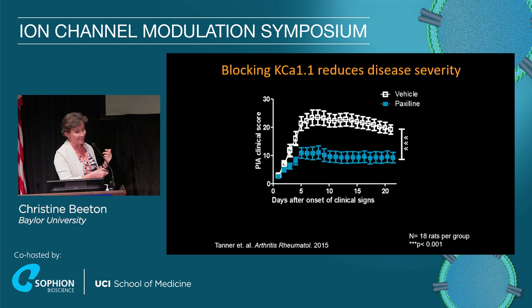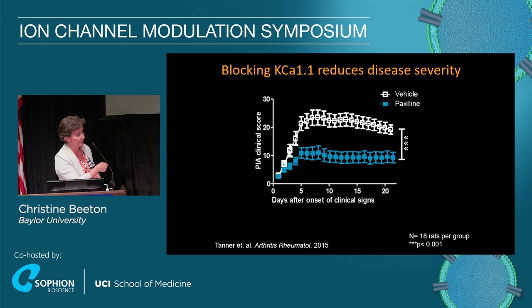We rationalized that if paxilin didn't work, nothing was going to work and the project was dead. But paxilin actually did work. We induced a model of rheumatoid arthritis in rats, and when the rats had at least one joint affected, we started treating intraperitoneally — systemically — with either vehicle, shown here in white, or paxilin, shown here in blue. As you can see, paxilin can stop disease progression in this very severe model of rheumatoid arthritis.